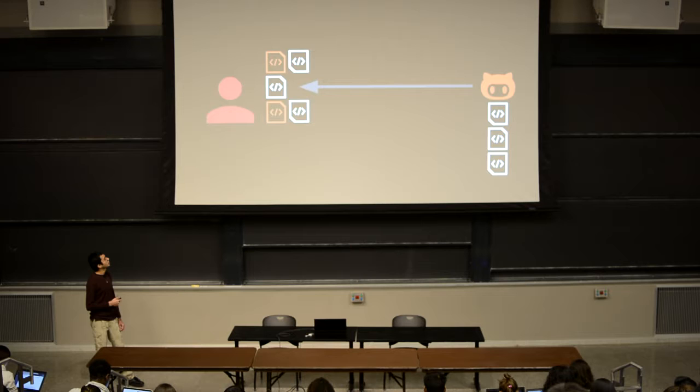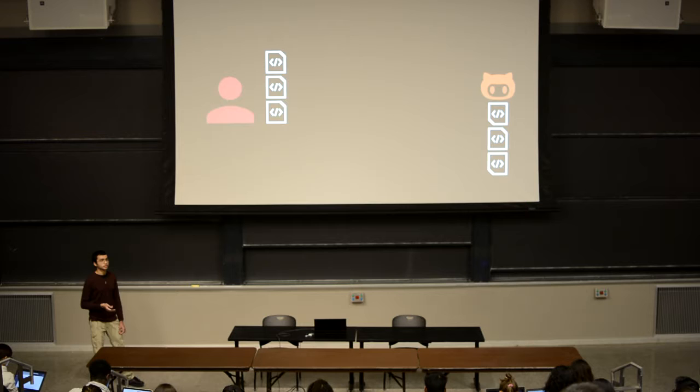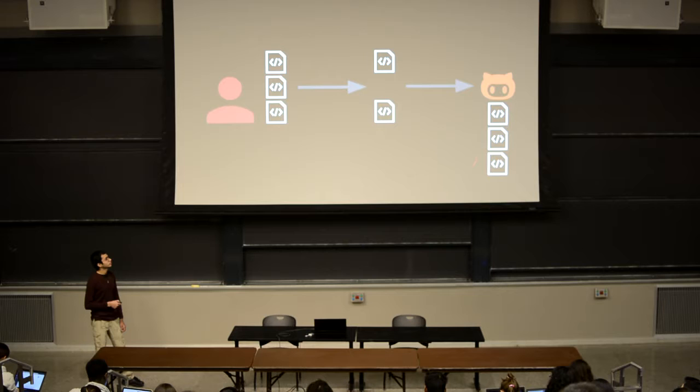So what can Tom do? Tom can pull the file changes from GitHub to his computer. GitHub sends Jerry's two files that he created, and Tom can receive them. Now Tom will have both versions of the files. Normally Git can automatically merge them if they modify different parts of the same file. But if both users modify the same parts of the same file, this is called a conflict, and users need to fix these conflicts themselves. After merging, Tom can restage his files and push them back to GitHub, and GitHub will have both Tom's and Jerry's changes.